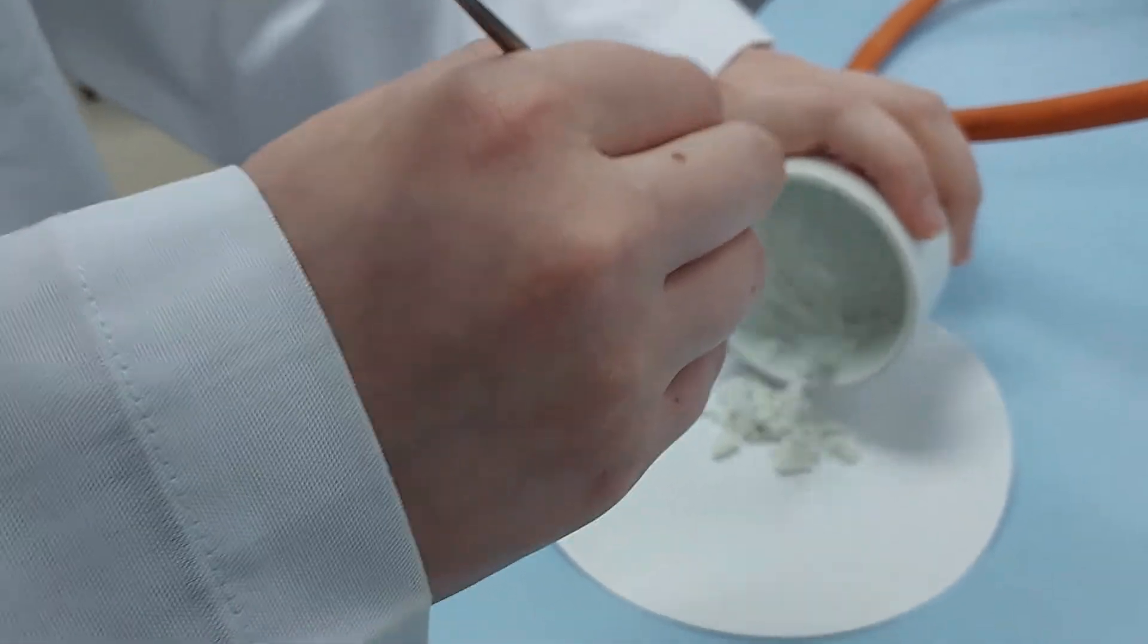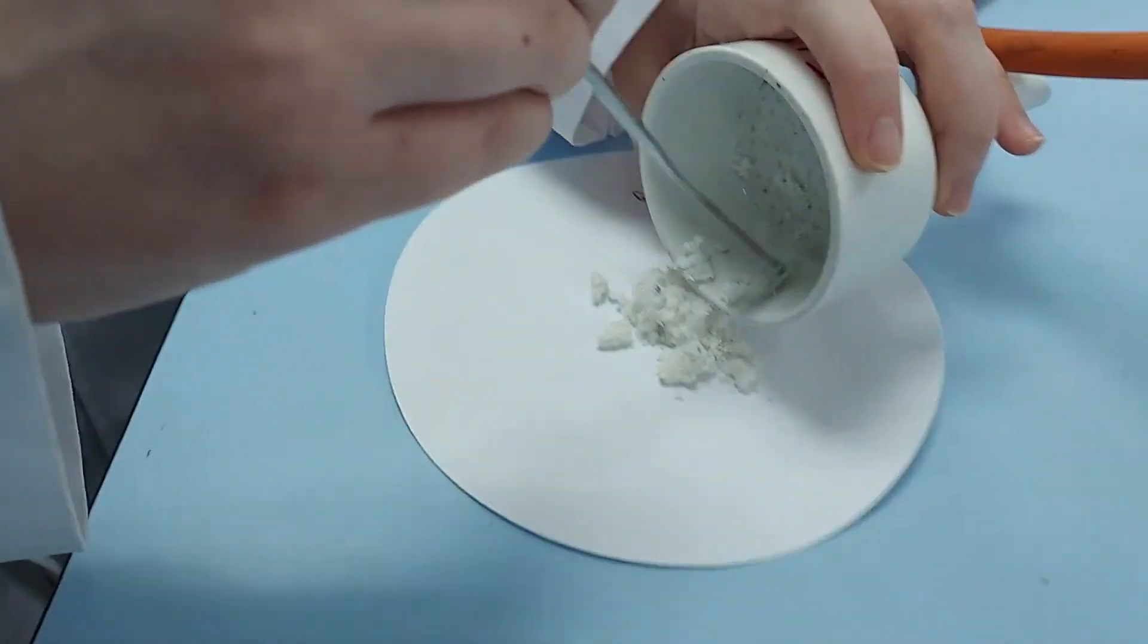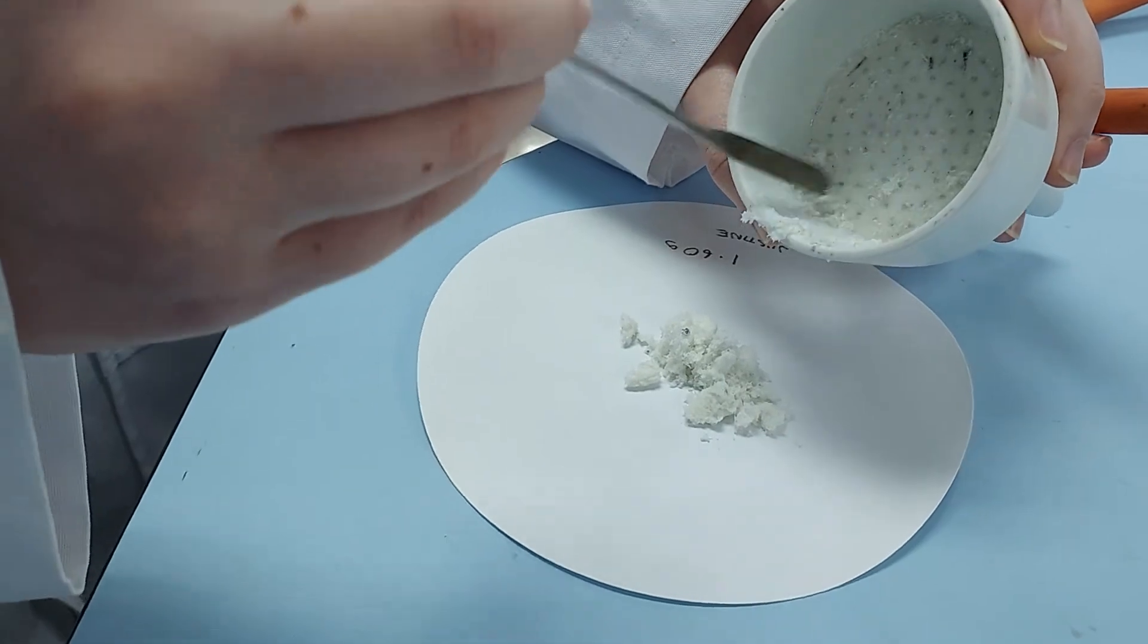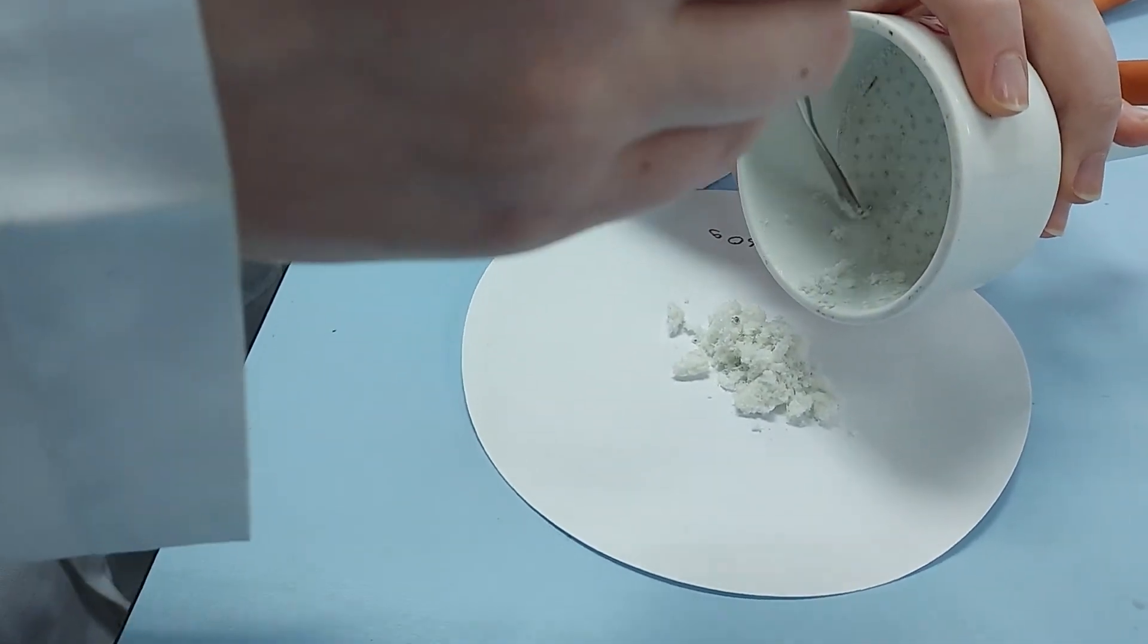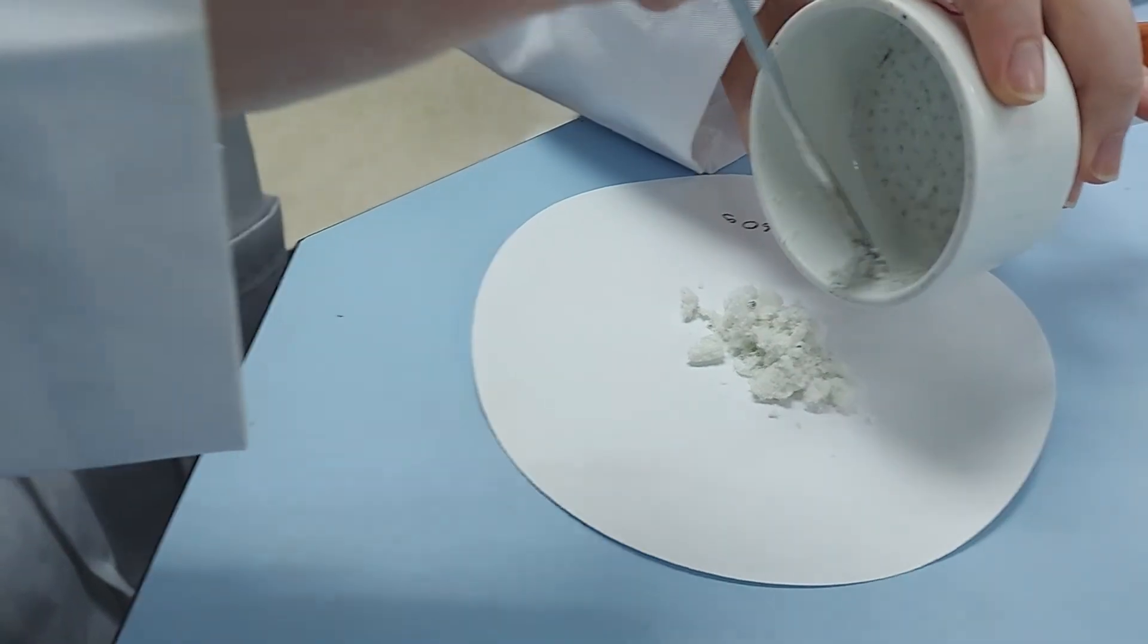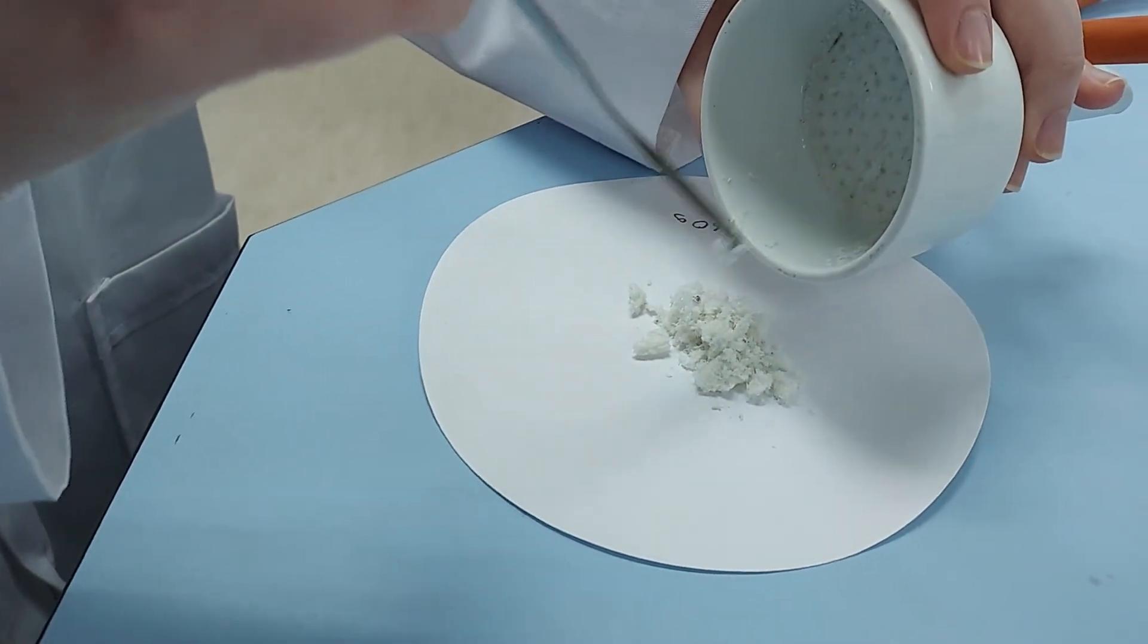So the air dried product has now been placed on a filter paper that's been weighed. We're going to see what our yield is and then this is going to go into an oven to dry.